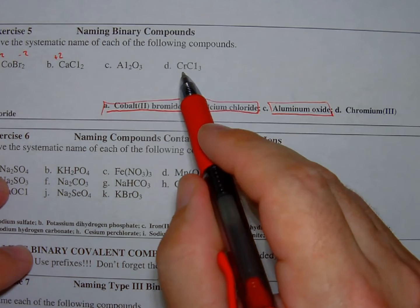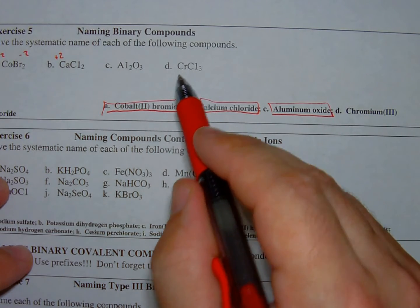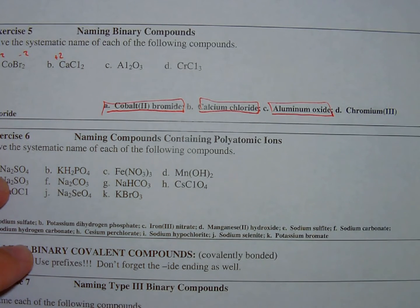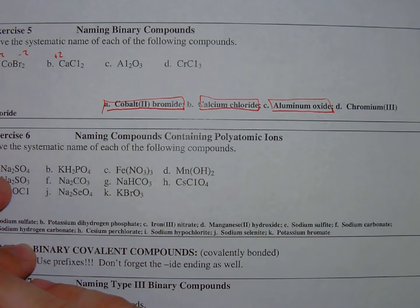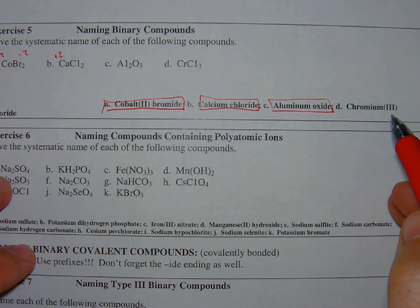When I get over here to D, I see this is chromium. And chromium, yes, it's a transition metal. And it's not one of the heavy metal bad boys that only form one charge just to throw you off. It's not zinc, cadmium, or silver. And so it's going to need a Roman numeral.